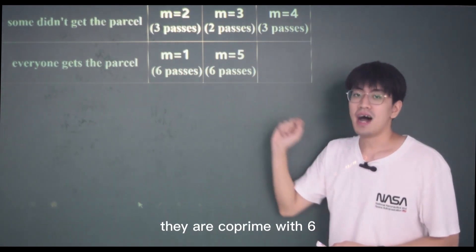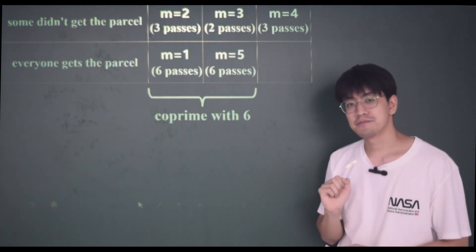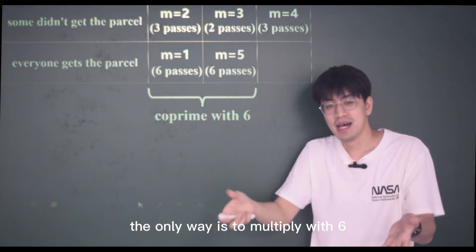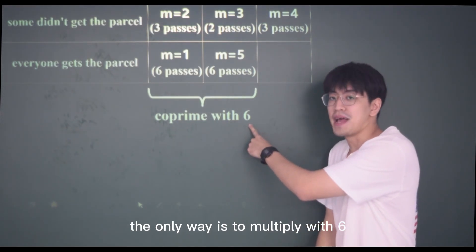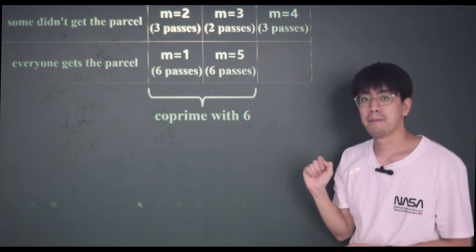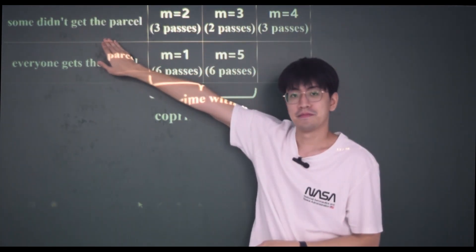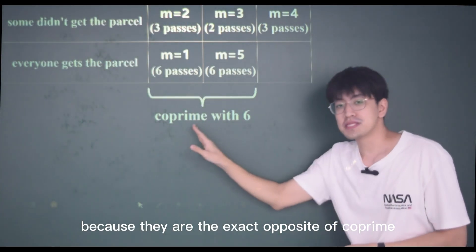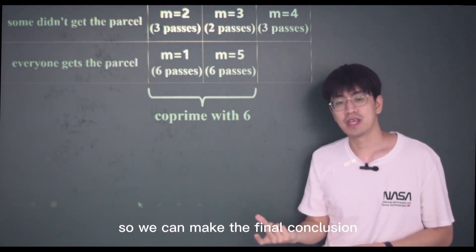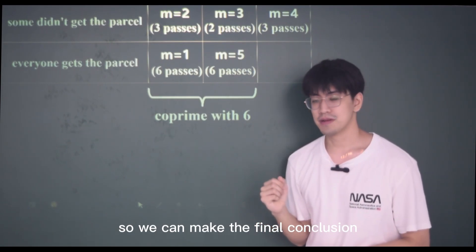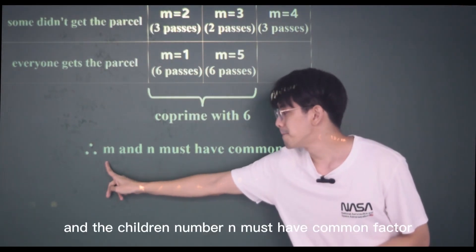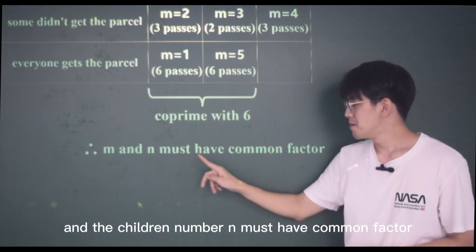Brilliant! They are coprime with six. If one and five are coprime with six, in order to get a multiple of six, the only way is to multiply with six. And what's so different about these three numbers here? What makes them work? Because they are the exact opposite of coprime. They all share a common factor with six. So we can make the final conclusion: in order to have some children did not get the parcel, the magic number M and the children number N must have common factor.